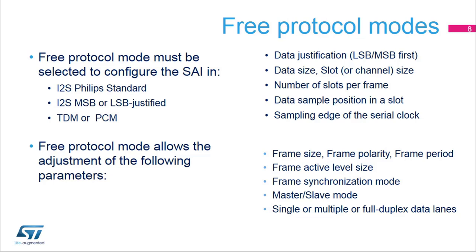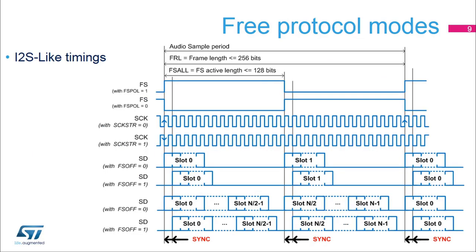The free protocol mode, the flexible programming interface, facilitates the configuration of most common audio standard interfaces. In I2S-like protocol, each edge of the frame synchronization or FS signal is used to align the slot's start position. The frame length, duty cycle, and polarity can be adjusted. The clock strobing edge can be selected. The position of the slots with respect to the frame edges can be selected. The number of slots per frame needs to be an even number in I2S-like protocol.